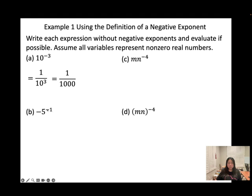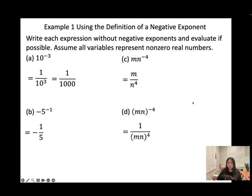For b, the negative 1 only applies to the 5, not the negative sign in front. So you get negative 1 over 5 to the power of 1, which is negative 1 over 5. For c, mn to the power of negative 4 — the negative 4 only applies to n, so we keep m outside: m times 1 over n to the power of 4. For d, there's a parenthesis, so the negative 4 applies to both m and n, giving 1 over (mn) to the power of 4.